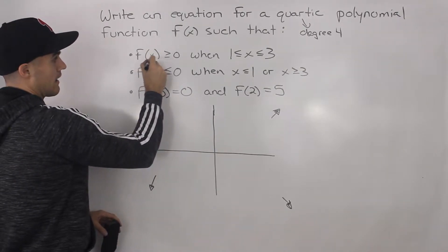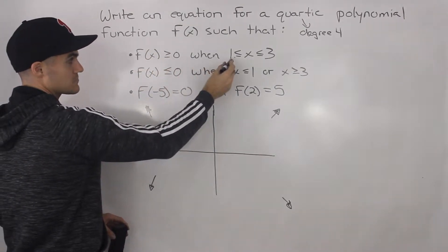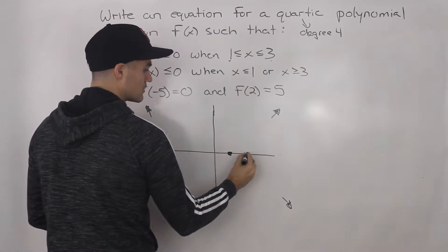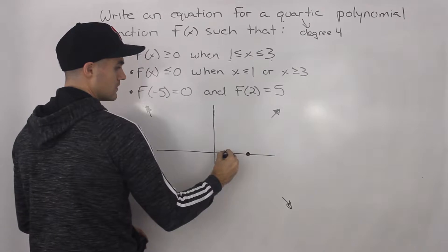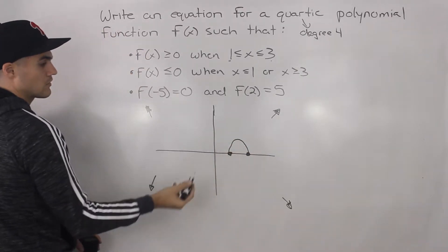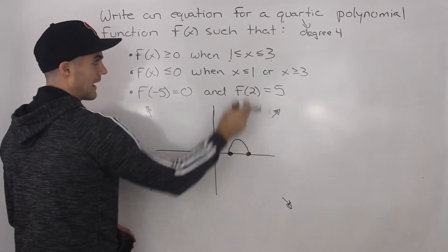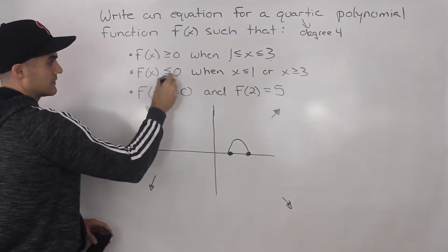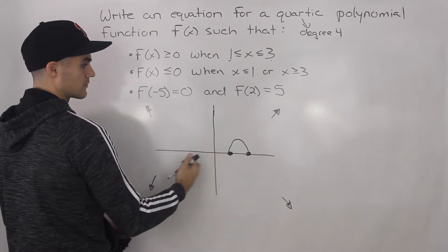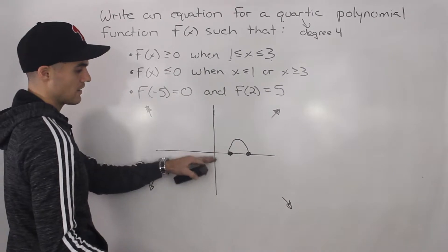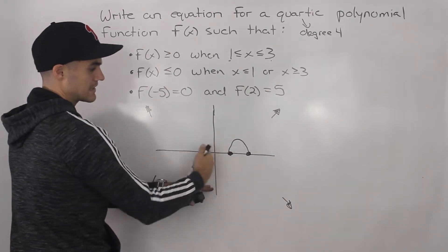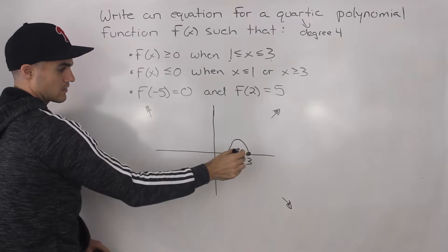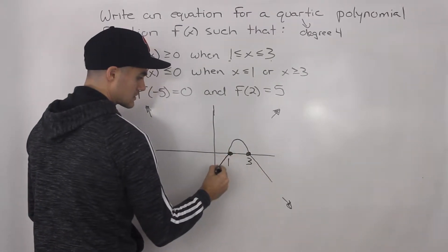F of x is greater than or equal to zero when x is between one and three, so those points represent the x-intercepts at one and three. The function is greater than or equal to zero in that interval and equal to zero at those endpoints. F of x is less than or equal to zero when x is less than one and also negative when x is greater than three, so it's going to look something like this on both sides.